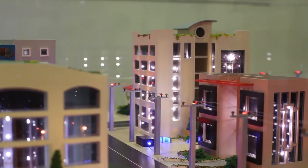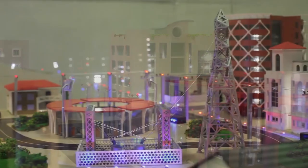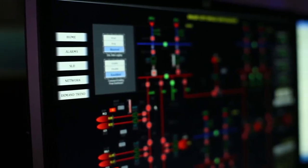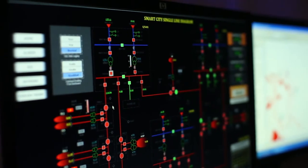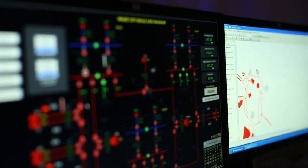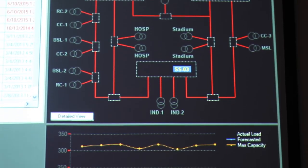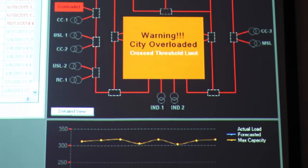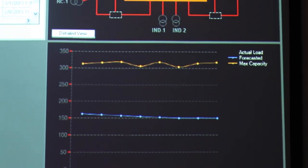Before smart grid came into picture, utilities used to operate a lot of things manually. There is no interaction between multiple systems that they have in place. If these systems are not integrated, utilities have to spend a lot of time managing two systems independently. What we have done is we have created a unified dashboard that brings in all the relevant information on a single screen, so utilities can actually take decisions in a much faster way.